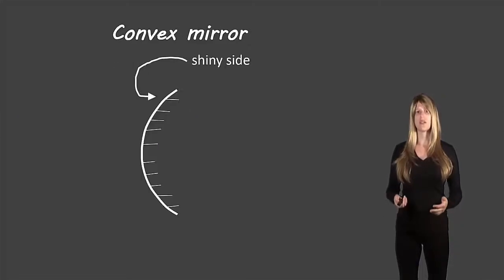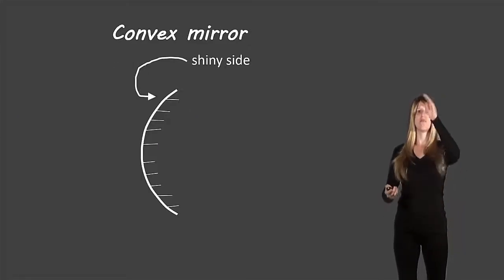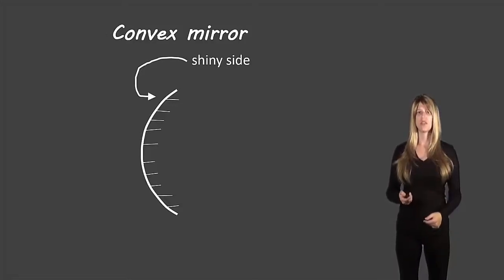Now let's take a look at convex mirrors. In this case the shiny side bends towards you. So you can't walk into it like a cave. The shiny side bends towards you.